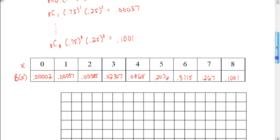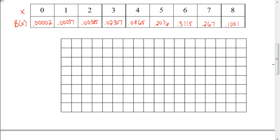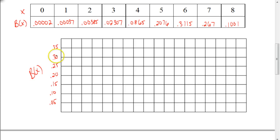Now we're going to transfer this information into a graph. When we create a graph, it's important to label our information. The y-axis will be labeled b(x). Looking at the values, the largest number is about 0.31, so I want to go up to at least 0.3. Counting by 0.05 gives a good description of the data. Along the x-axis, we're going to put bars, with each bar being two square lengths wide so they fit in nicely.